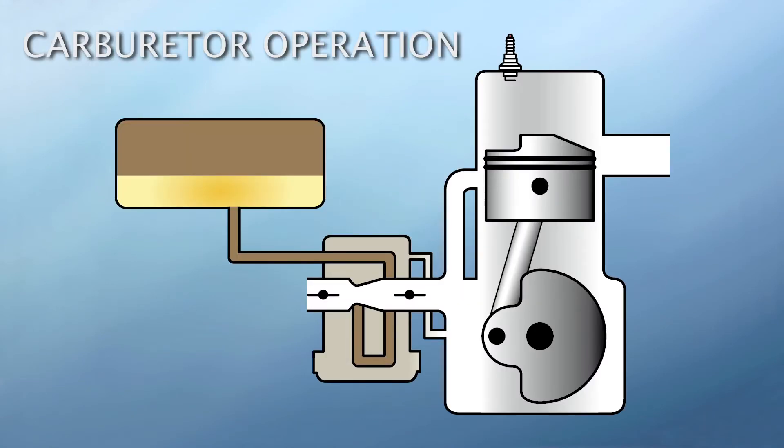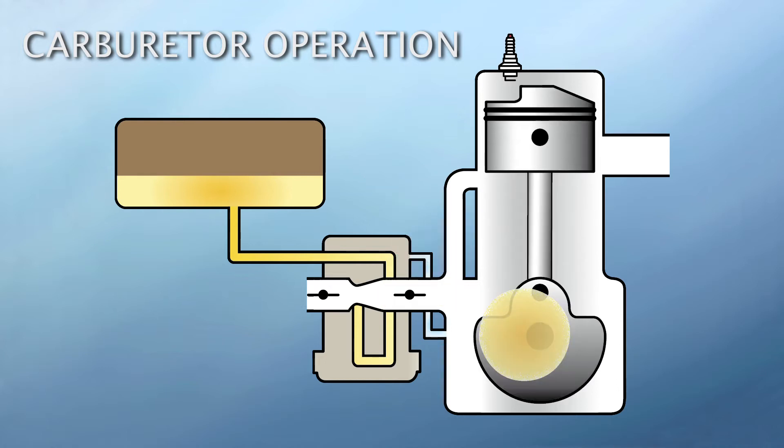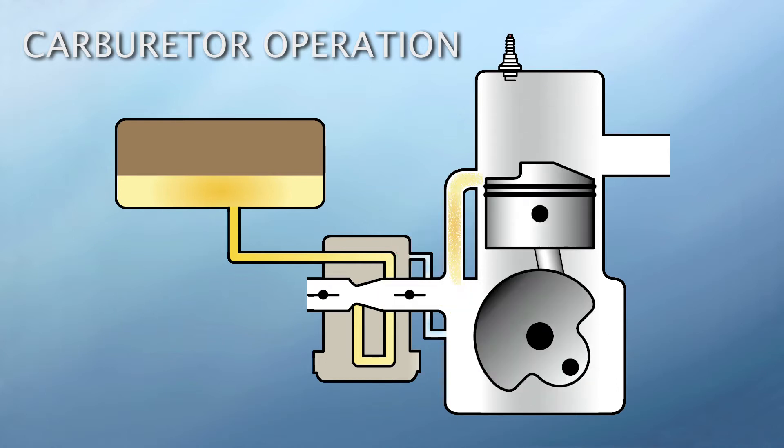The carburetor does three important tasks. First, fuel is drawn from the gas tank into the carburetor. Second, the fuel is metered to match the engine's RPM and load requirements. And finally, the metered amount of fuel is mixed with air and delivered to the crankcase at the proper time in the engine's operating cycle.